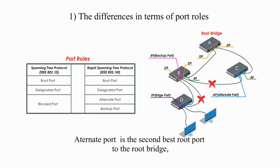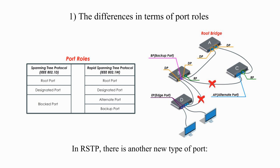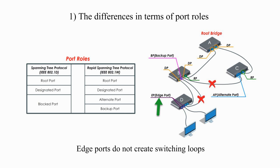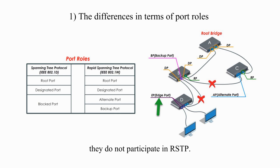In other words, a Backup Port is a substitute to the same LAN segment away from the root bridge. To summarize, Alternate Port is the second best root port to the root bridge, and a Backup Port is the second best designated port to another switch or hub, but not to the root bridge. In Rapid Spanning Tree Protocol, there is another new type of port: Edge Port. An Edge Port is directly connected to an endpoint workstation or device. Edge ports do not create switching loops and do not cause any topology change. Edge ports are in the forwarding state, but in a normal situation, they do not participate in Rapid Spanning Tree Protocol.